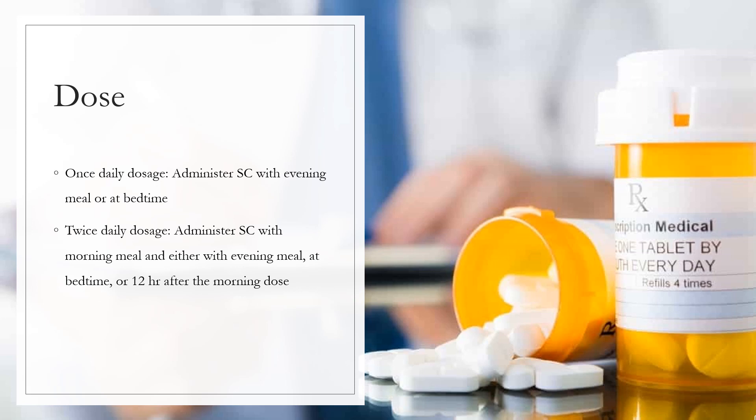Type 2 diabetes inadequately controlled on oral medication: 10 units per day subcutaneously or 0.2 units per kg per day in evening or divided every 12 hours. Type 2 diabetes inadequately controlled on GLP-1 receptor agonist: 10 units per day subcutaneously given once daily in evening. Subsequently adjust dose based on blood glucose measurement.